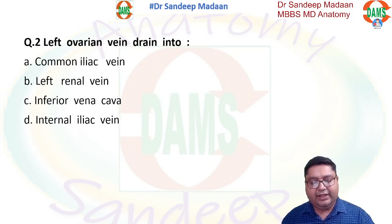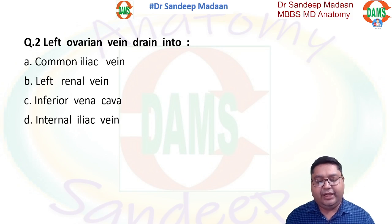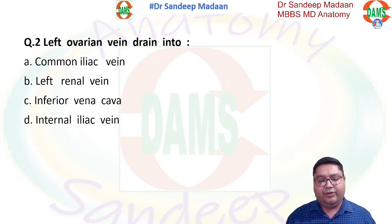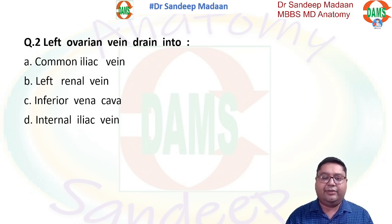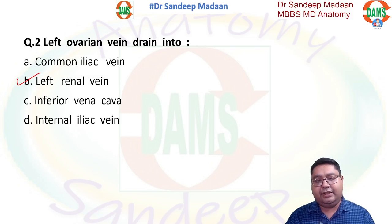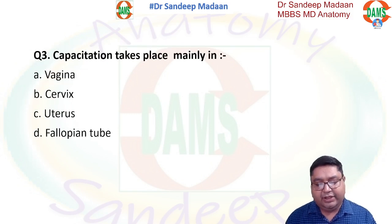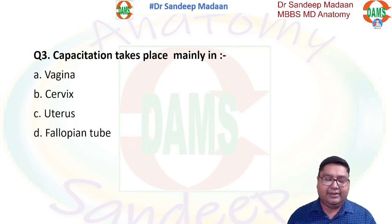Next question: left ovarian vein drains into what? The left ovarian vein is the left gonadal vein — ovaries and testes are the gonads. Whether the question is on the left gonadal vein or the left suprarenal vein, these veins drain into the left renal vein. That is why B is the answer. Their counterparts on the right side — right gonadal and right suprarenal — drain directly into the IVC.